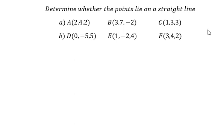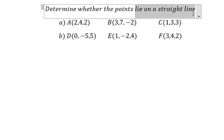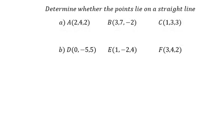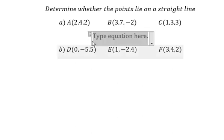Hello everybody. Today I will show you how to answer whether a point can lie on a straight line or not. For question 8, the first thing we need to find is vector AB, so that should be like this.